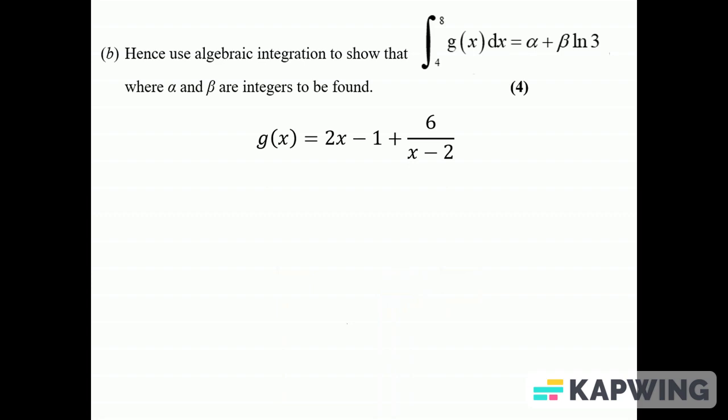So it's something plus something times ln 3, and tells us when you stick integrate and stick 8 and 4 in. So we'll do the integration and I'll get x² - x and then 6 ln(x - 2), and I'm going to sub in those limits of 8 and 4.